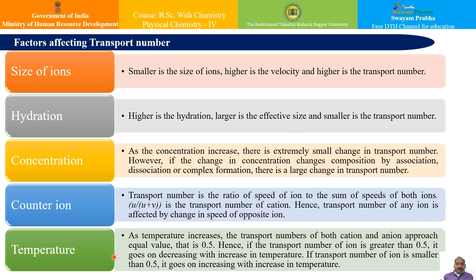The last factor is temperature. As temperature increases, the transport number of both cation and anion approaches the equal value of 0.5. Hence, if the transport number of an ion is greater than 0.5, it decreases with increasing temperature. If the transport number of an ion is smaller than 0.5, it increases with increasing temperature.